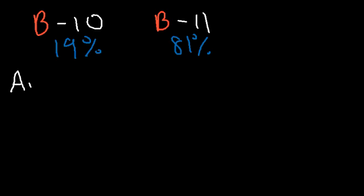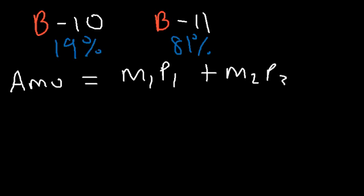So the equation that you need to calculate the average atomic mass is equal to the mass of the isotope times its percentage in the form of a decimal plus M2P2. And this can keep on going. So if you have another isotope, it could be plus M3P3.